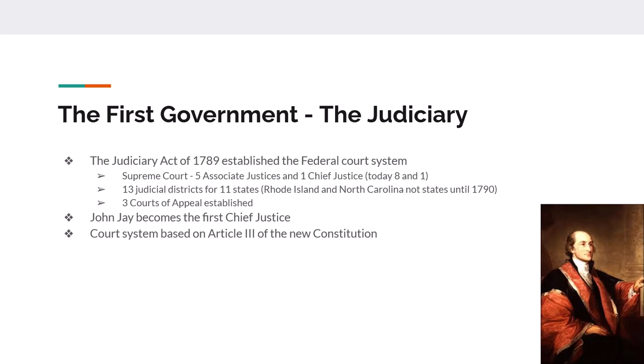The top court is the Supreme Court. Originally there were five Associate Justices and one Chief Justice. Today that's been expanded to eight Associate Justices and one Chief Justice for a total of nine. There are also three Courts of Appeal, and below that were 13 District Courts for 11 states. The first Chief Justice is John Jay.